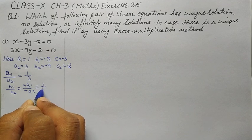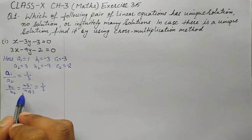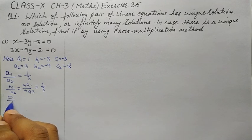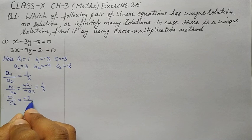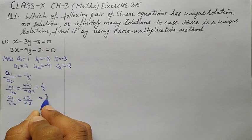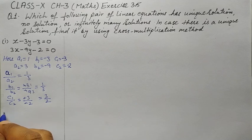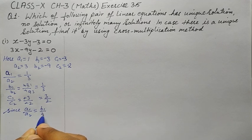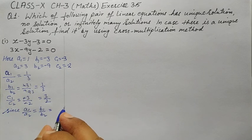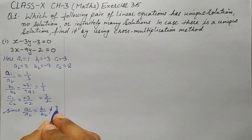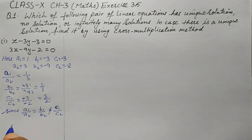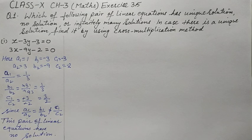Here a1/a2 equals b1/b2 (both are 1/3). Now c1/c2 = −3/−2 = 3/2. Since a1/a2 = b1/b2 but does not equal c1/c2, this pair of linear equations has no solution.